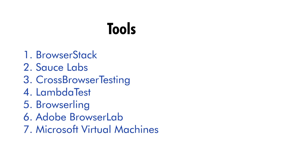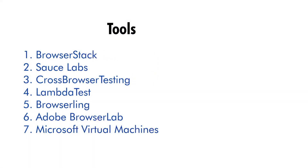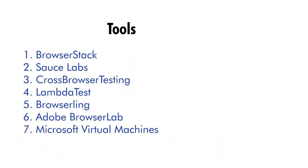Third, CrossBrowserTesting — a tool that enables you to test your website or application on over 2000 real desktops and mobile browsers. Fourth, LambdaTest — a cloud-based testing tool that allows you to test on over 2000 real devices and browsers. Fifth, Browser Link — a web-based testing tool that provides access to virtual machines running different browsers and operating systems. Sixth, Adobe BrowserLab — allows you to preview your website in different browsers and operating systems. Seventh, Microsoft Virtual Machines — a collection of virtual machines to test different versions of Internet Explorer. These tools provide features including real-time testing, automated testing, visual regression testing, and many more.